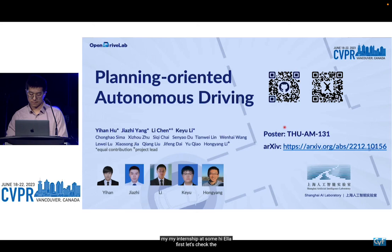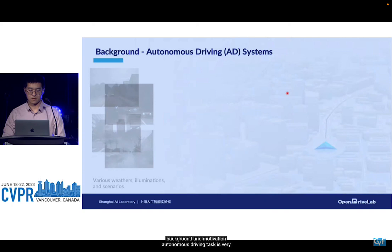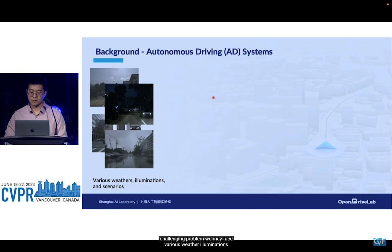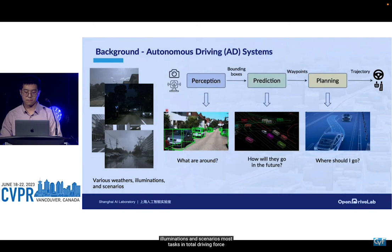First, let's check the background and motivation. Autonomous driving is a very challenging problem — we may face various weather, illuminations, and scenarios. Most tasks in autonomous driving fall into three categories: perception, prediction, and planning.